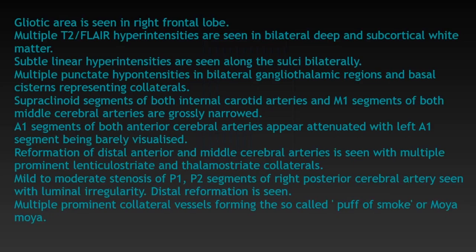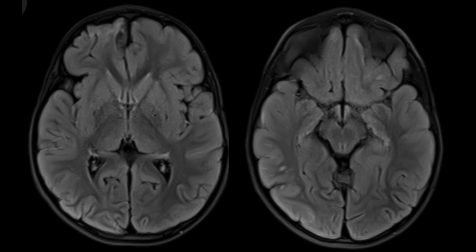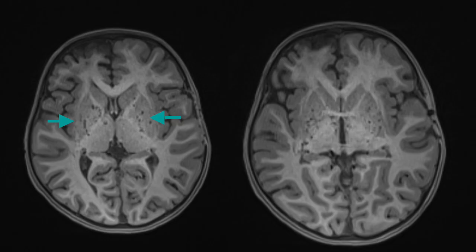To summarize: there is a gliotic area in the right frontal lobe, multiple hyperintensities in bilateral deep and subcortical white matter representing chronic ischemic areas, subtle linear hyperintensities along the sulci bilaterally — the so-called ivy sign representing prominent pial collaterals — and multiple punctate hyperintensities in bilateral gangliothalamic regions and basal cisterns representing collaterals.